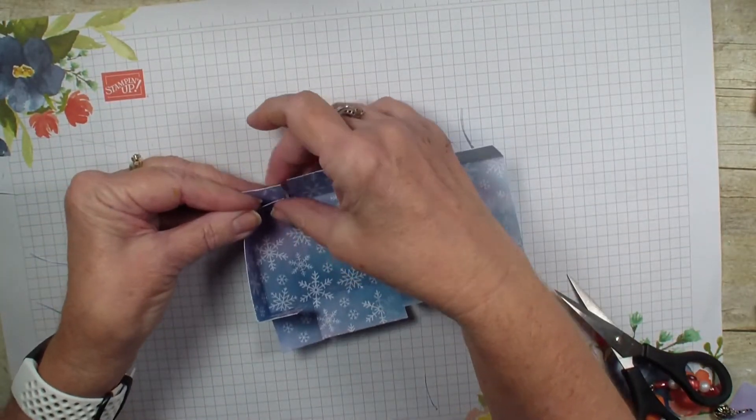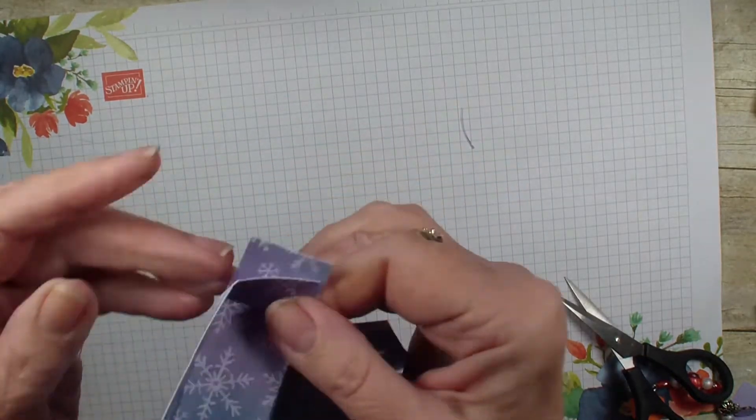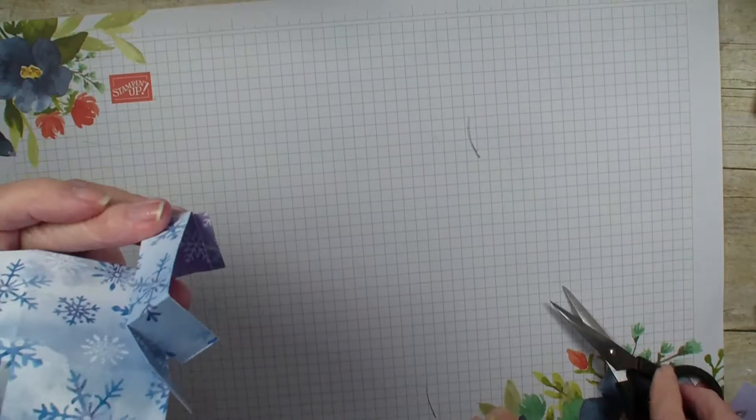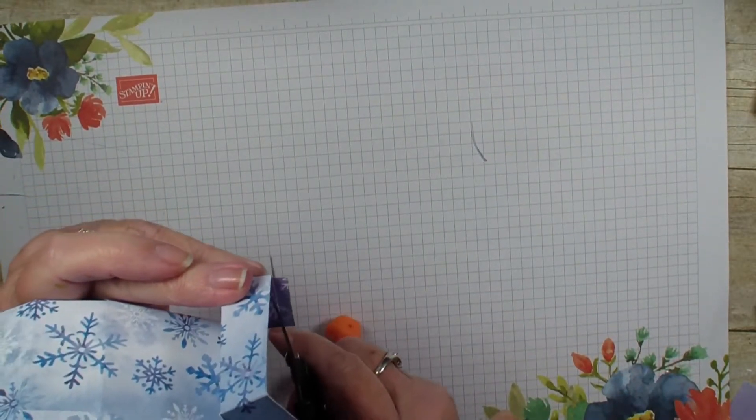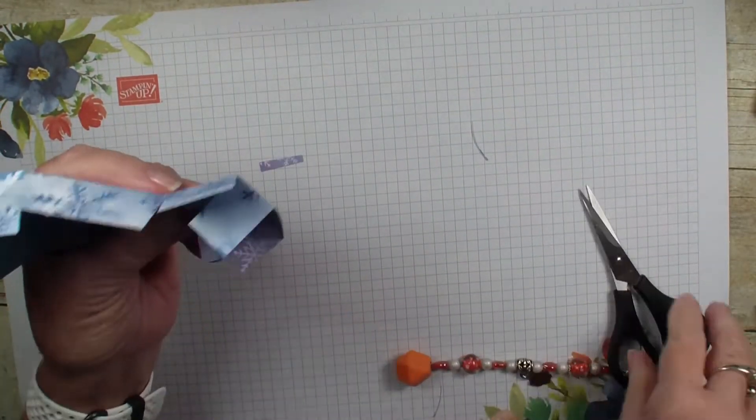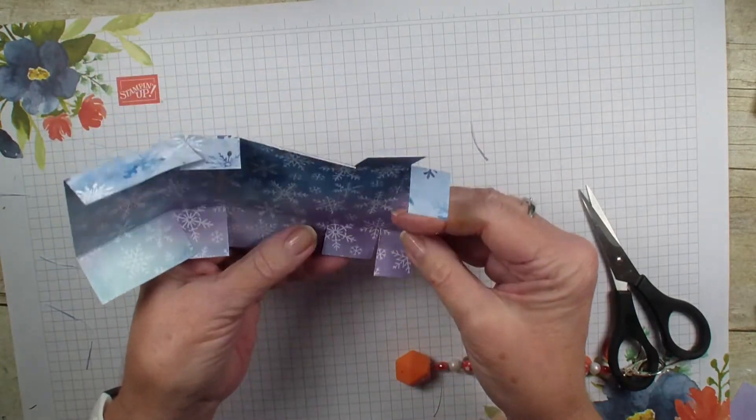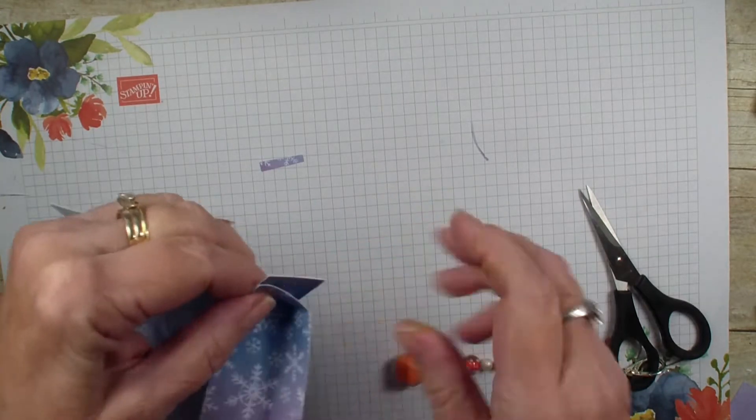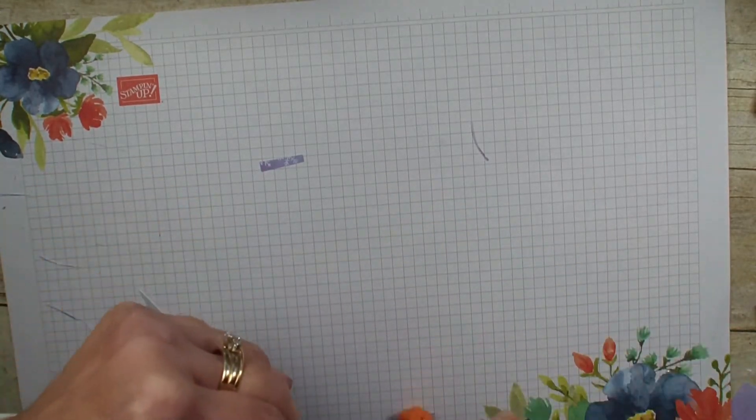This is just a little bit longer. I'm just going to eyeball it here and trim about a quarter of an inch off that flap. So you can see it's just a little bit shorter. I'm going to do the same on this side.